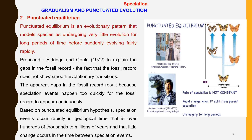The punctuated equilibrium theory was proposed by Eldridge and Gould in 1972. Eldridge was a curator at the American Museum of Natural History and Stephen Gould was a paleo-evolutionary biologist. According to them, speciation occurred rapidly in geological time and the rate of evolution was not constant. Gaps noticed in fossil records are because the speciation event happened rapidly for the fossil record to appear continuously. There had been long periods of time where no or little change occurred, followed by a sudden rapid change which led to speciation.